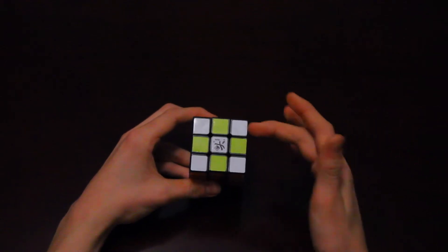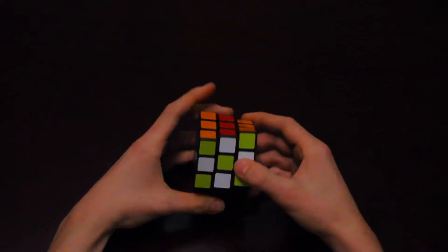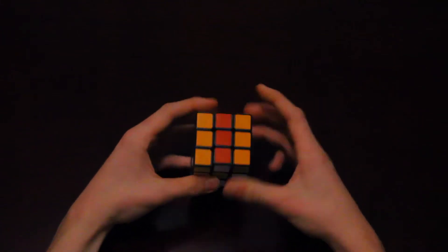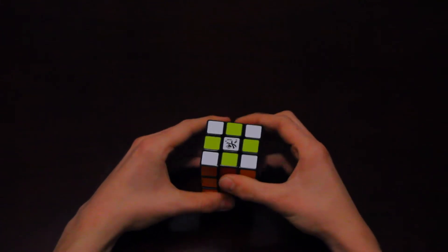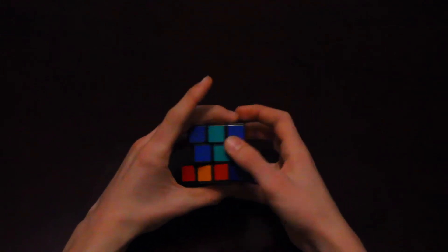So now, you should have a checkerboard pattern on the top and bottom faces of the cube. But now, we have to put a pattern on the rest of the four sides.